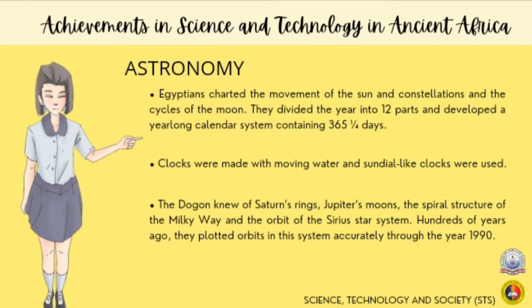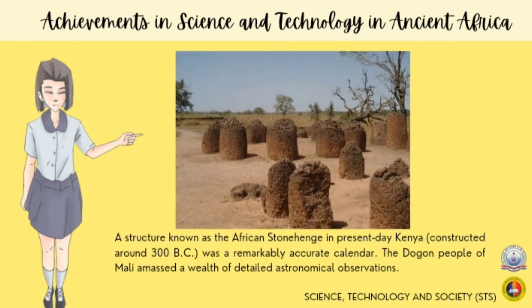Another achievement in science and technology in ancient Africa is astronomy. Several ancient African cultures birthed discoveries in astronomy. They charted the movement of the sun, constellations, and the cycles of the moon. They divided the year into 12 parts and developed a year-long calendar system containing 365 and a quarter days. Clocks were made with moving water and sundial-like devices. The Dogon knowledge of Saturn's rings, Jupiter's moons, the spiral structure of the Milky Way, and the orbit of the Sirius star system was remarkable — they plotted orbits accurately through the year 1990. The Dogon people of Mali amassed a wealth of detailed astronomical observation.